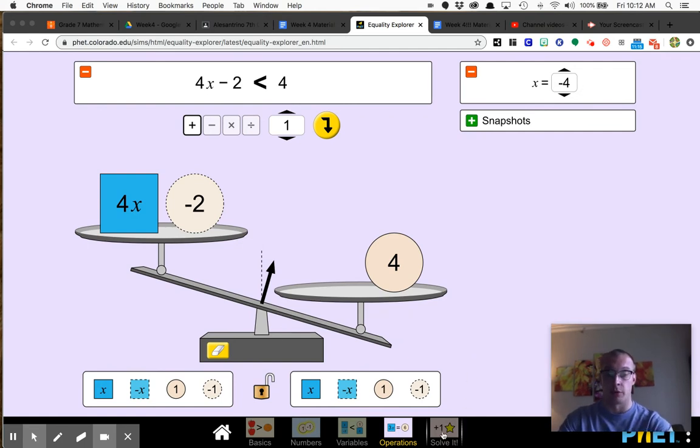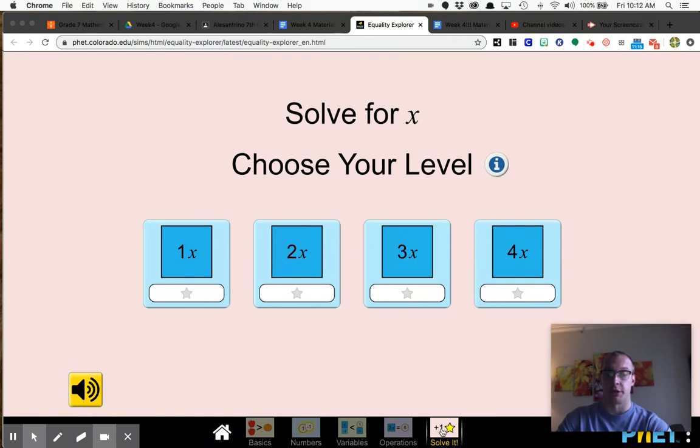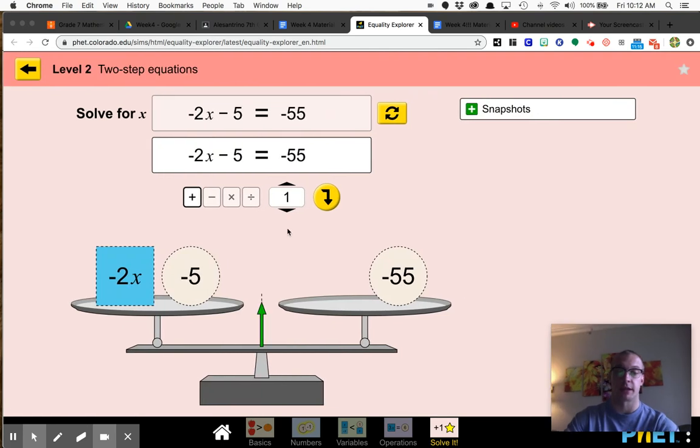And then for the bonus, you're just going to click on the solve it square, or you can go back to the link in your Google Doc and then select a difficulty level. I'm going to select the second level just to show you.